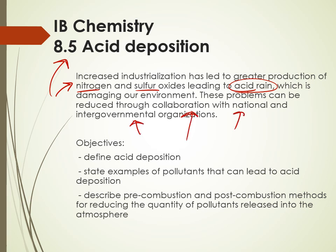Our objectives: we're going to define acid deposition, state some examples of pollutants that can lead to acid deposition, then describe pre-combustion — before we burn the fossil fuels — and post-combustion — after we burn the fossil fuels — methods for reducing the quantity of pollutants we are releasing into the atmosphere.